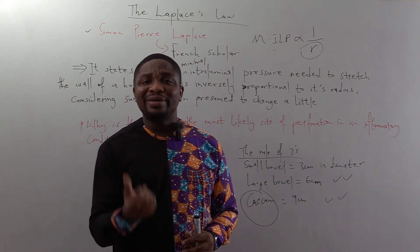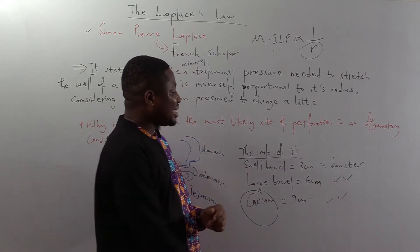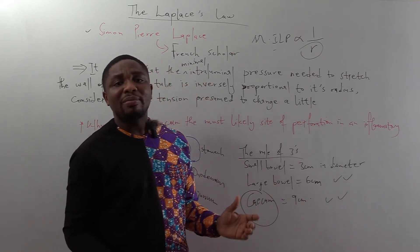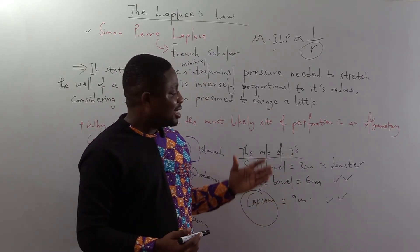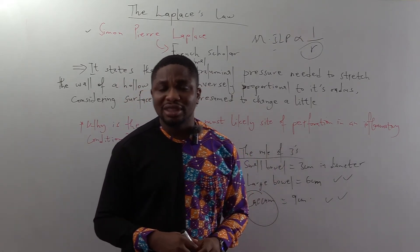And you should know that to get the radius, you have to divide the diameter by two. And if you should do that across board, the small bowel will have 1.5 centimeters, the large bowel, 3 centimeters, and the cecum, 4.5 centimeters.